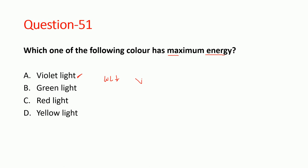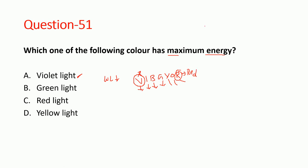If you remember the word VIBGYOR — V is violet, I is indigo, B is blue, G is green, Y is yellow, O is orange, and R is red. In VIBGYOR, violet has maximum energy whereas red has the lowest energy. So maximum is violet and minimum is red. The answer is violet — option A is correct.